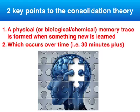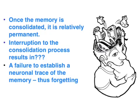The two key points for the VCE psychology course are: in order for a long-term memory to be consolidated, the memory trace must have a chance to be set, and this takes time. If the consolidation process is interrupted we'll have forgetting. If there's no interruption, the memory trace will form and we'll have a relatively permanent memory.